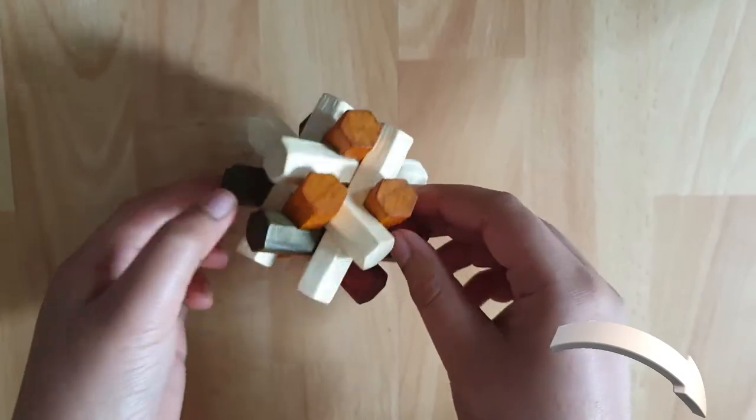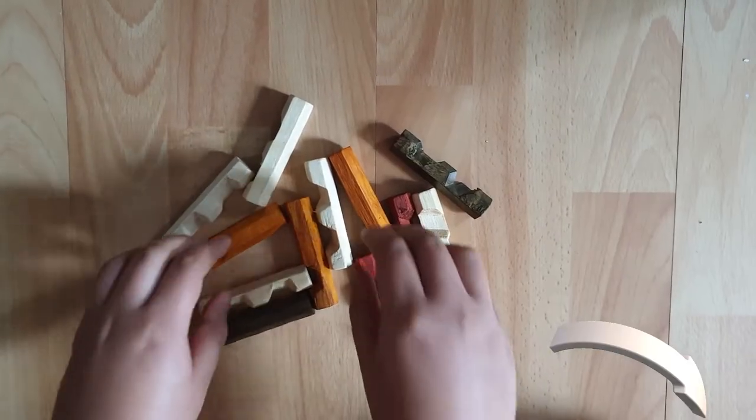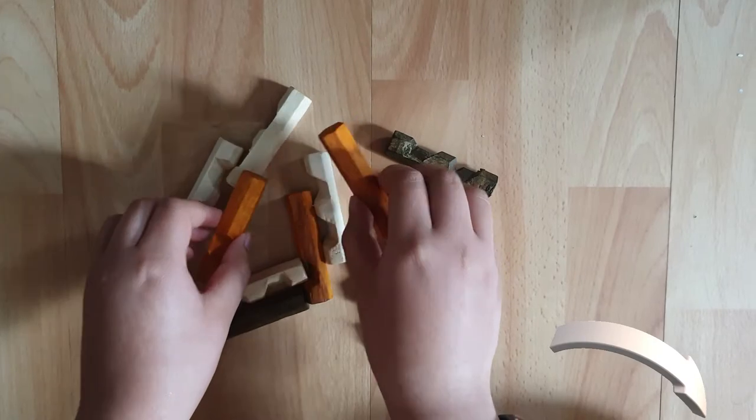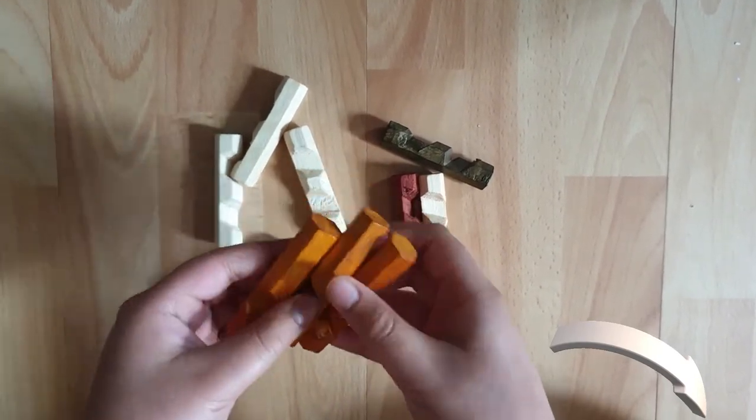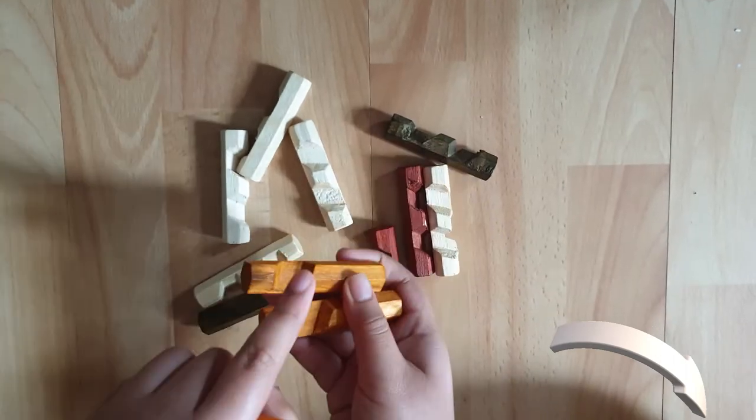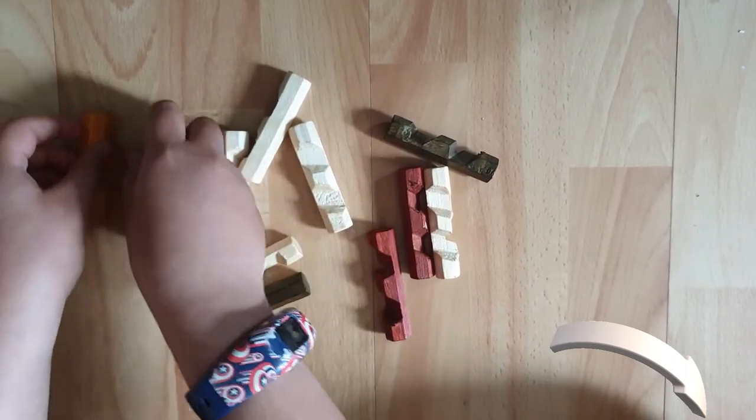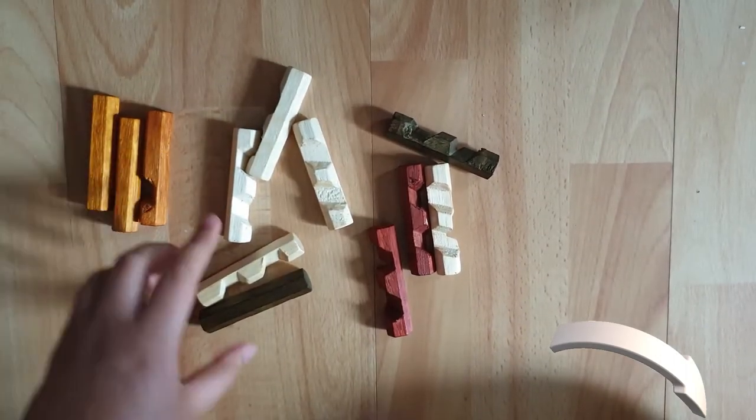So let me disassemble this and show you how to do it. Okay, so if you have the colored one like mine then you're just going to pick out the three golden ones, or otherwise pick out the ones with one hole in them. That's one group right there.